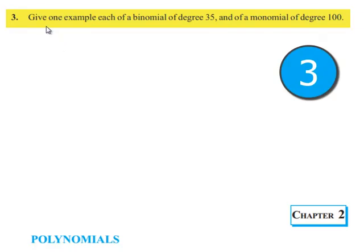Moving on to the third problem, give one example each of a binomial of degree 35 and of a monomial of degree 100. Let us see the solution.